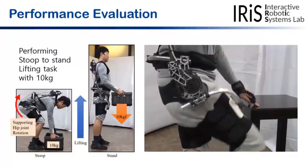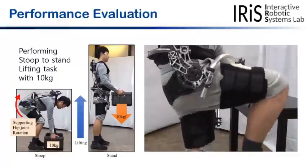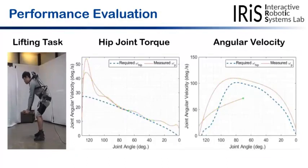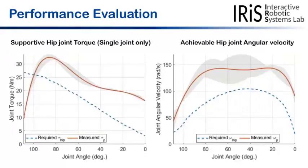The wearer manually controlled lifting and lowering sequence with the controller. During the experiment, the wearer performed stoop stand motion with 10 kg load holding in their hands.